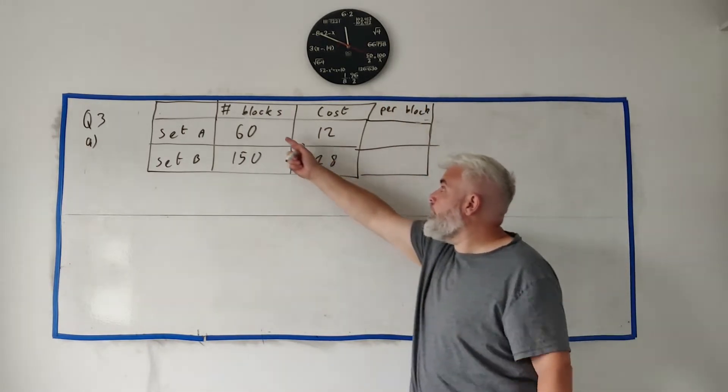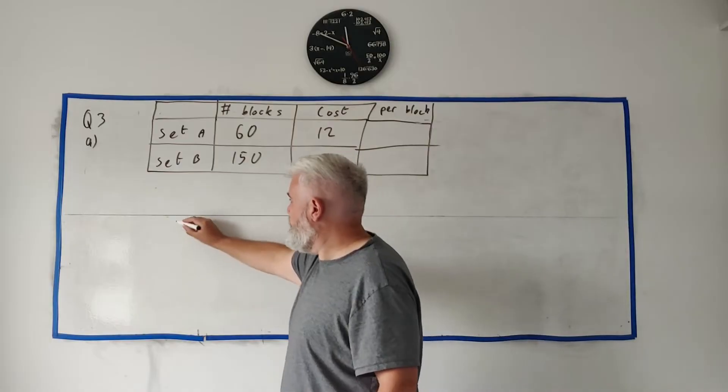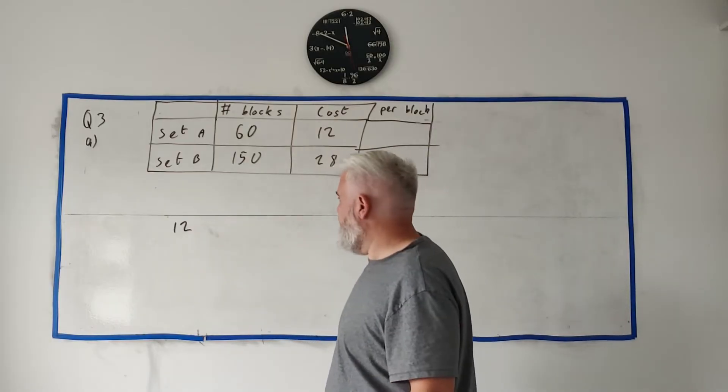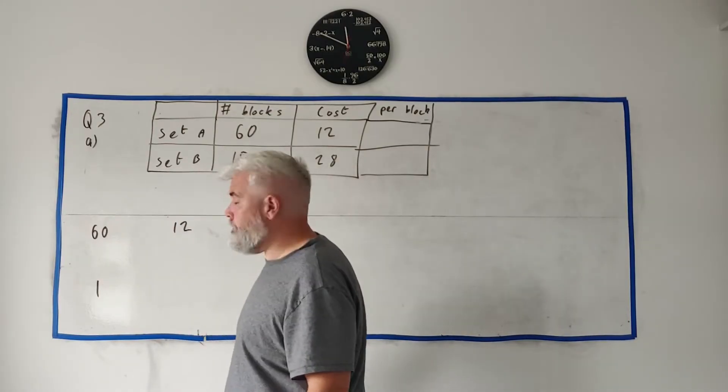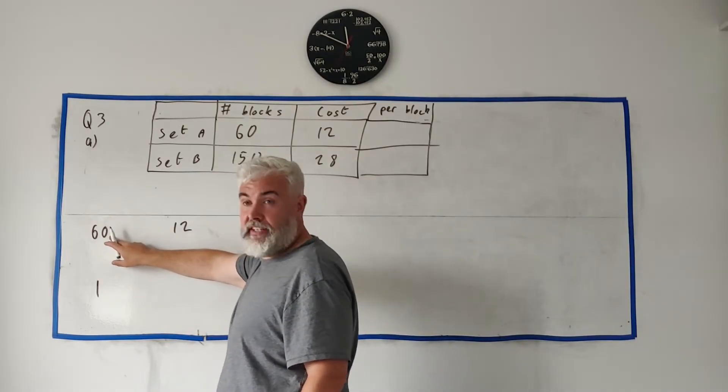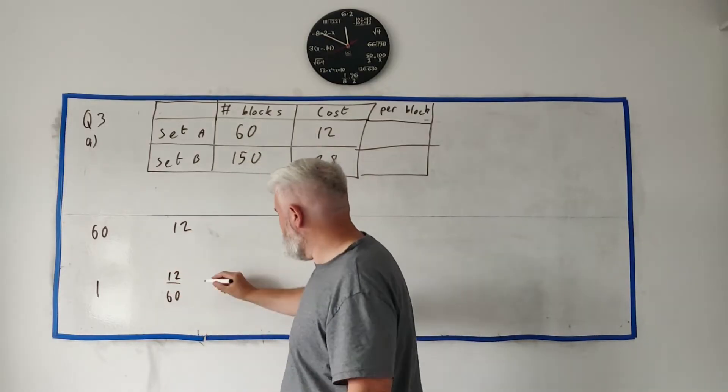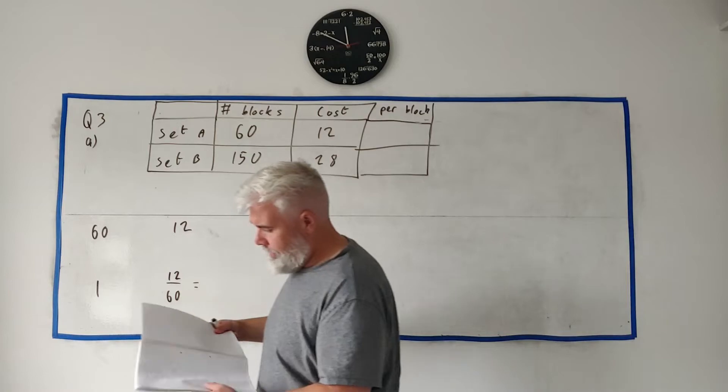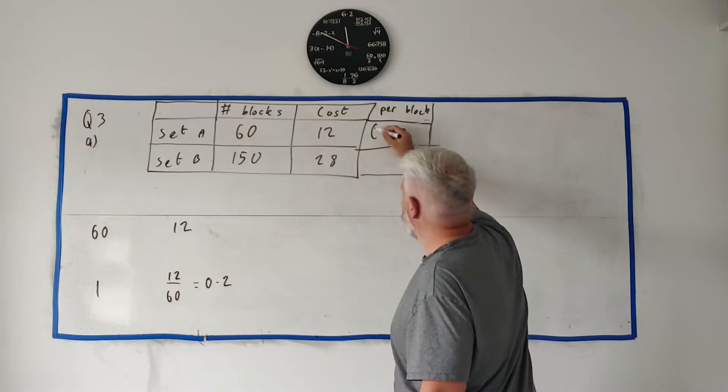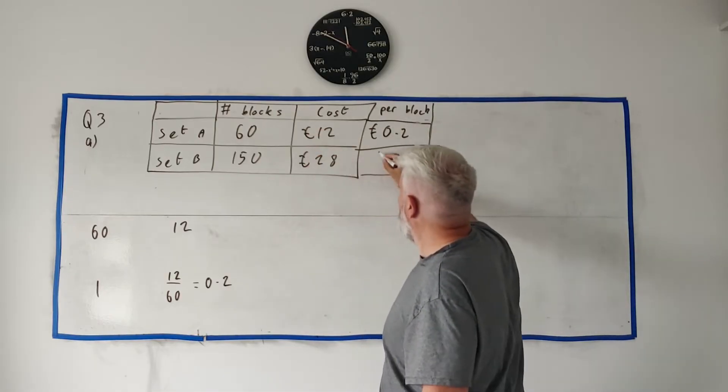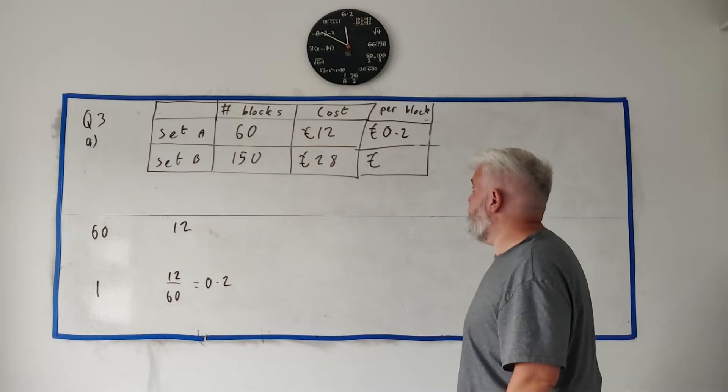So how do we find that? How much is one of these blocks in set A? Well there's 60 blocks and they cost 12 euro. So how much does one block cost? I guess we could do it slowly like this. 60 costs 12. How much does one cost? Well divide 60 by 60 we get one. Divide 12 by 60 we get our answer. So how much does one cost? 12 divided by 60 is 0.2, 0.2 euro. And let's put in the euro signs here. So 20 cent for every block.